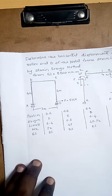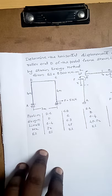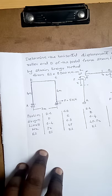Here A to B is 4 meters, B to C is 3 meters, and C to D is 4 meters. It is subjected to a load at roller end D of 5 kN towards the right side. We will consider that load P as P equals 5 kN.